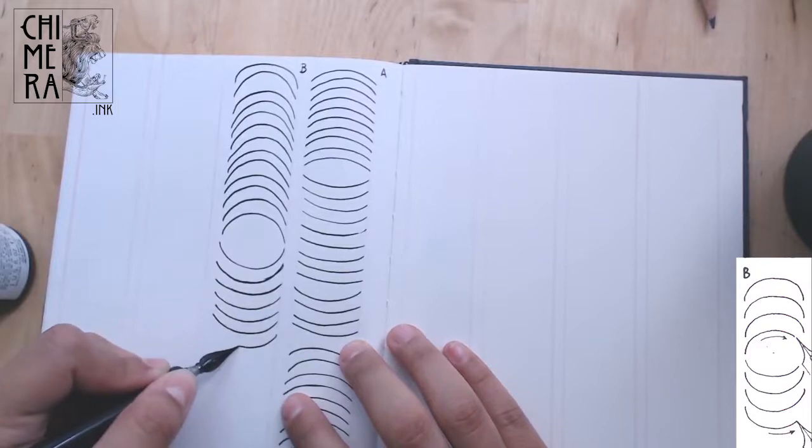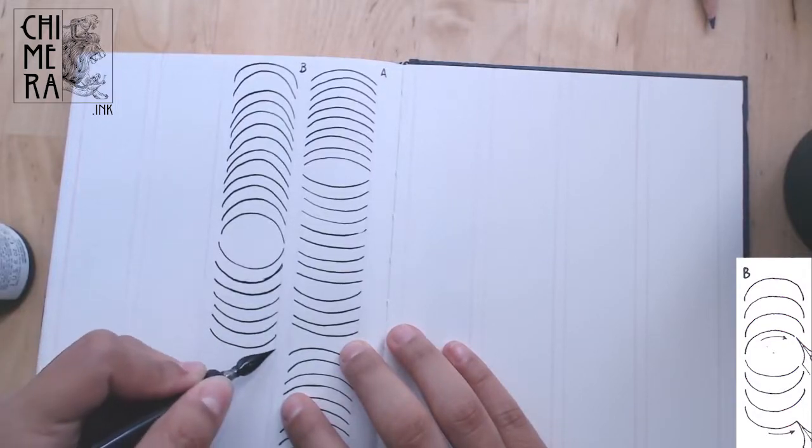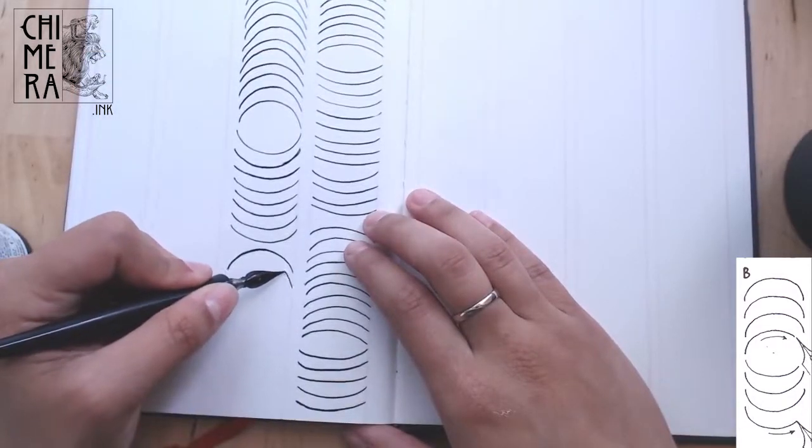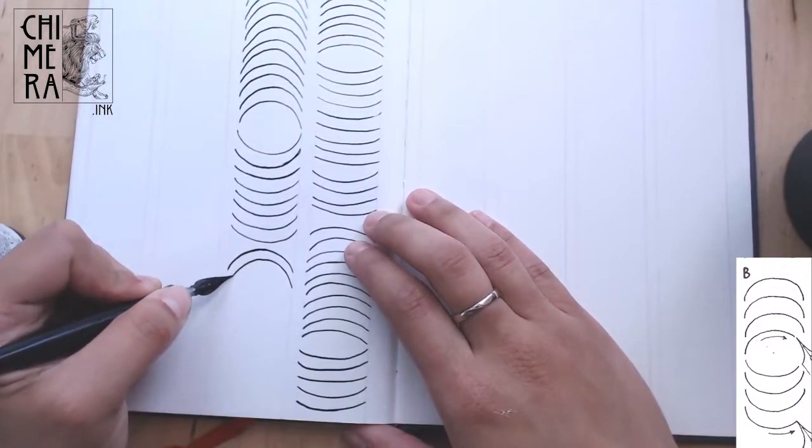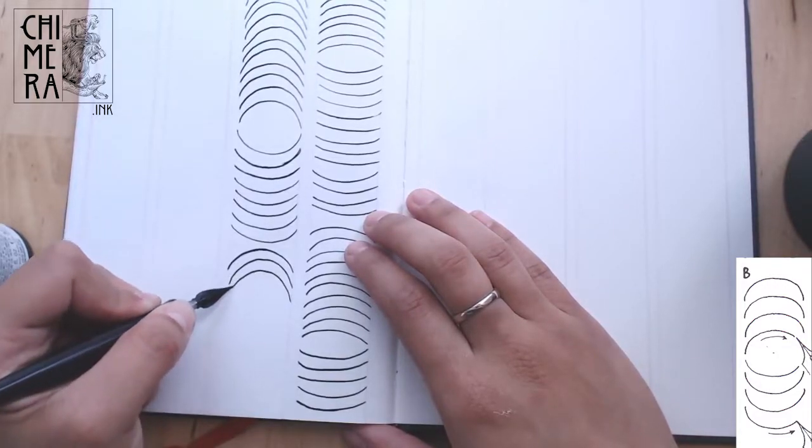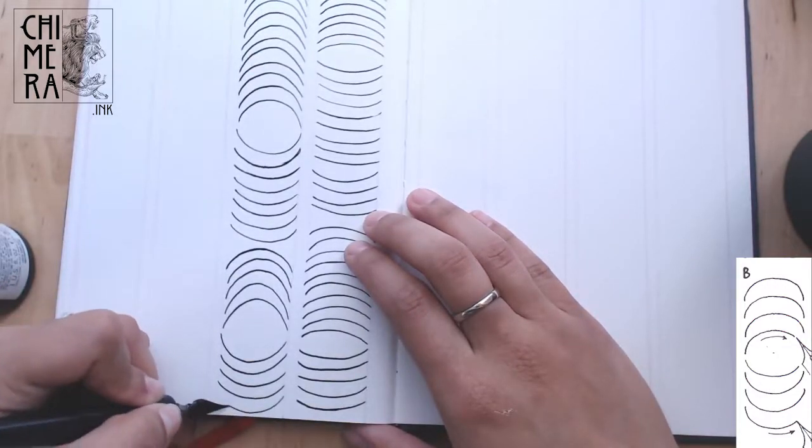B is same as A, but with a rounder arch. As you can probably see, I find evenly spaced curves super difficult, so I usually do a bunch of these. Same thing, upwards, then downwards.